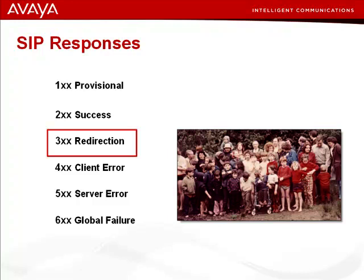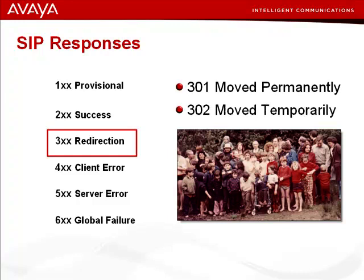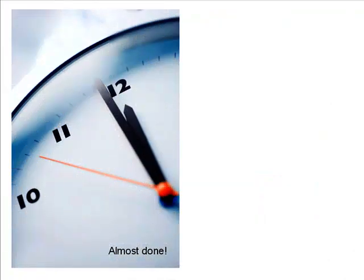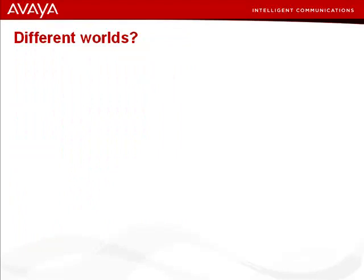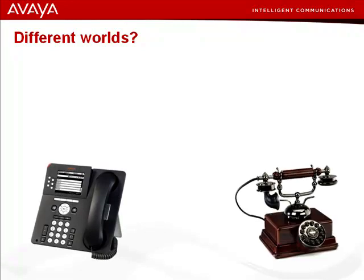Any response beginning with a 3 is a redirection response, meaning the invited party is not available at this location but may be found at the given alternative address. The two main redirection responses are the 301 Moved Permanently and the 302 Moved Temporarily. That's pretty much it for redirection. Let's talk about SIP in the real world. I remember in the early days of SIP wondering how long before SIP took over the world — before we'd all have SIP phones in our houses instead of regular plain old telephones. SIP has been very widely adopted over the last ten years, but we're not at the point yet where we all have SIP phones.